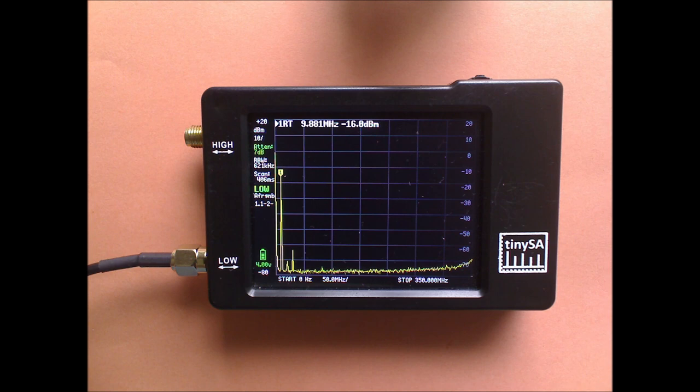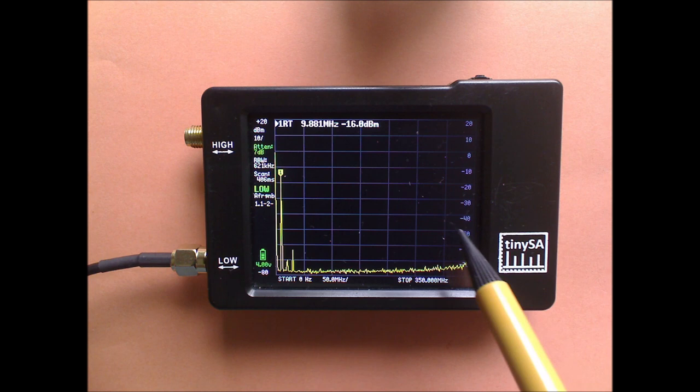We start with the wide scan of the FM modulated signal. And as you can see, FM modulated signals do not jump up and down. So we can use the default settings of the TinySA. No need to switch off the AGC. Next step is to zoom in.